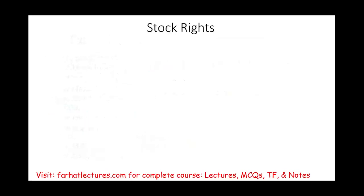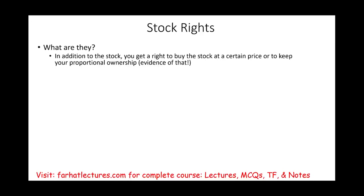Let's move on to stock rights. Sometimes when you buy stock, you might also receive a right — the right to buy more stock at a certain price. For example, buying 1,000 shares might give you 100 rights to purchase stock in the future at a set price. Rights are sometimes issued to maintain proportional ownership, preserving your preemptive right to keep your ownership percentage.